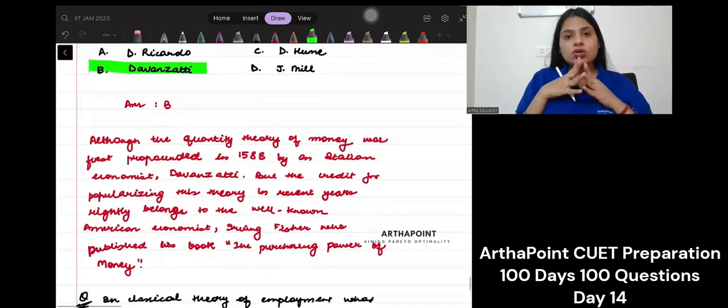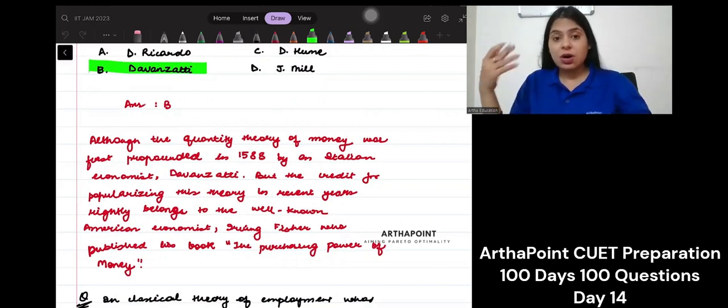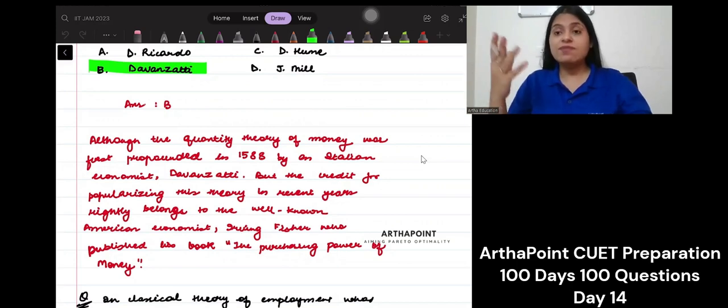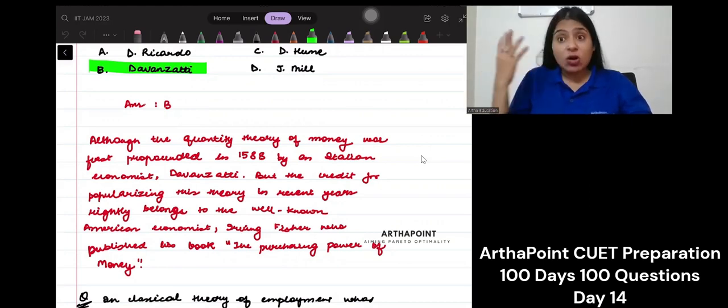Although when we hear about the quantity theory of money, we will always hear Fisher—quantity theory of money, Fisher's equation of exchange, MV equals PT, which was later translated to MV equals Py. So although we always hear the word Fisher coming in, it's not true.